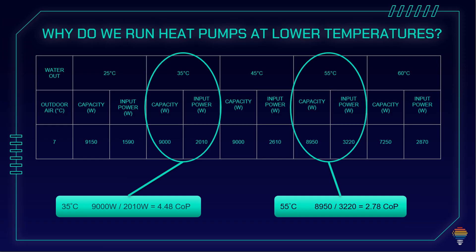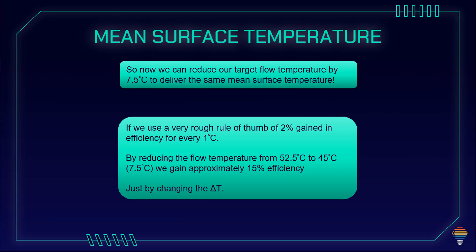What is the aim of this? The aim is to lower the flow temperature, and with a lower flow temperature — as we explained in one of our previous videos — our COP will be higher and our consumption will be lower. For every one degree lower, approximately 2% efficiency gain. So with this 7.5 degrees of lowering, we gain around 15% only by reducing our flow temperature.